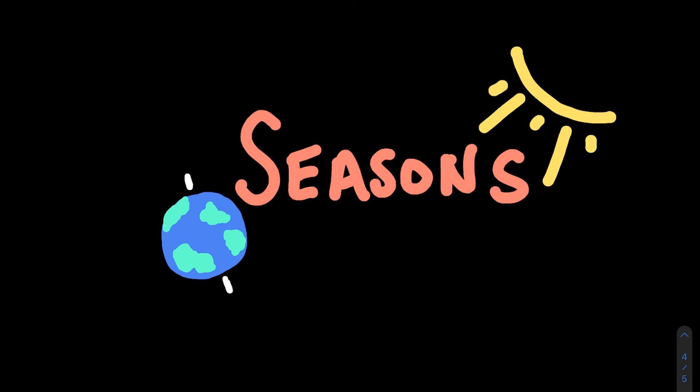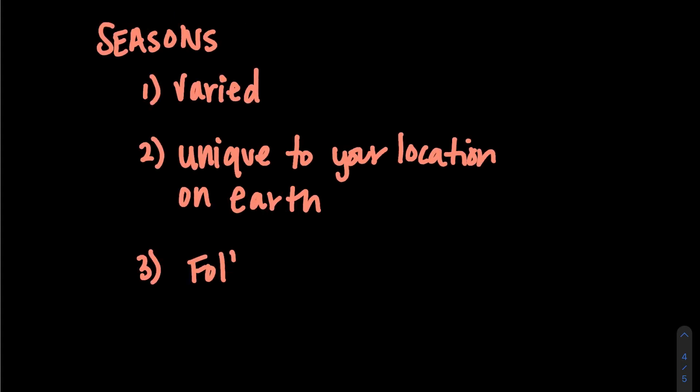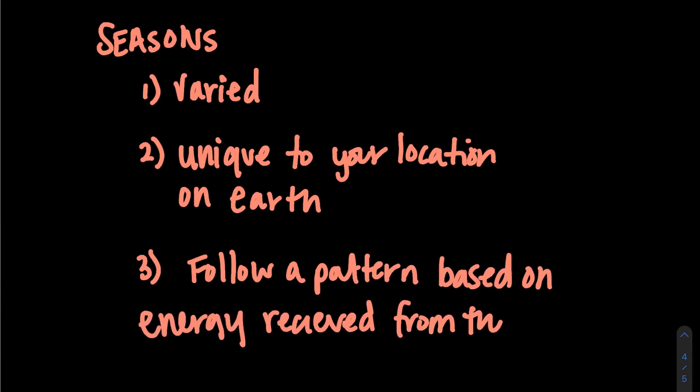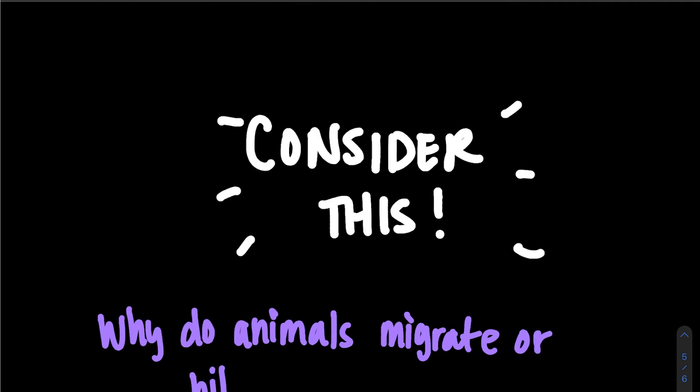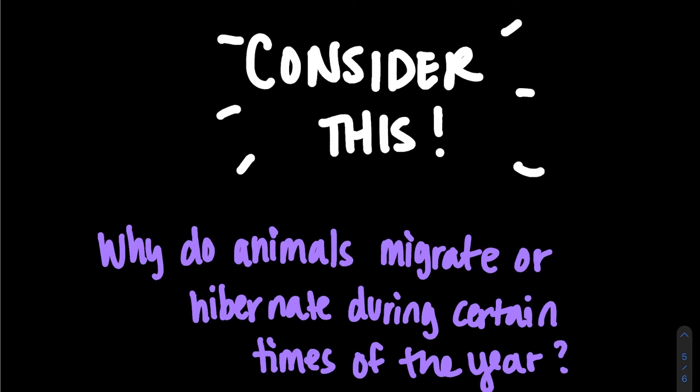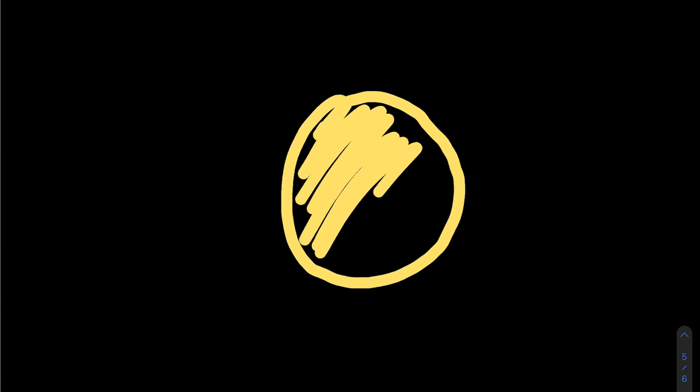One of my favorite things to talk about is seasons. Seasons are varied, allowing for different types of life to thrive, unique to our location on Earth, and follow a pattern based on the science of the sun and Earth's positions. Consider this: why do animals migrate or hibernate during certain times of the year? We'll learn why seasons occur and how they impact life on Earth, and I want you to keep that last question in the back of your mind.